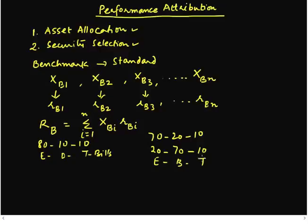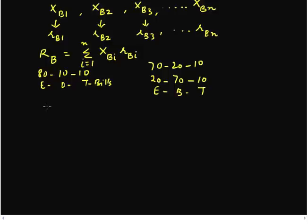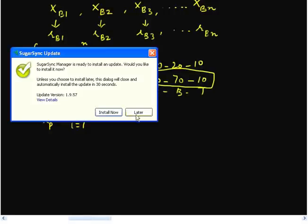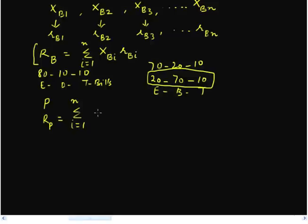If I do decide to deviate from the agreed-upon weighting, what will happen is that I'm going to create a new portfolio. Let's say this portfolio is called portfolio P. Like we calculated the return for our benchmark portfolio, we can calculate the return for the new portfolio I'm constructing by deviating from the agreed-upon weightings. The return for portfolio P is: R_P = Σ (i from 1 to N) X_Pi × R_Pi.